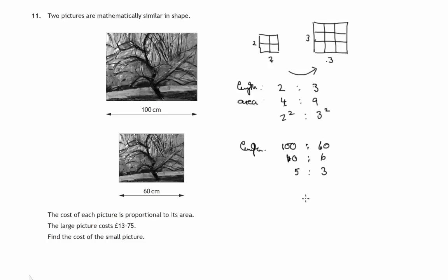So we've got a length of 5 on the large one would correspond to a length of 3 on the small one. And if we're looking at areas, let's square both of these. We'd have 5 squared to 3 squared, that's 25 to 9. So 25 area on the large one, 9 area on the small one.